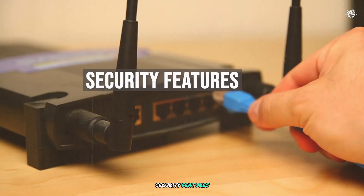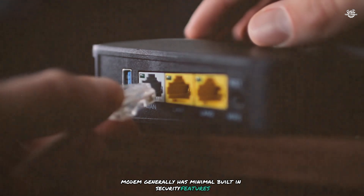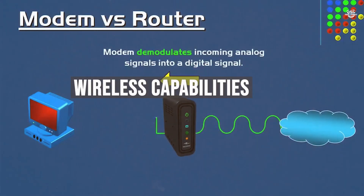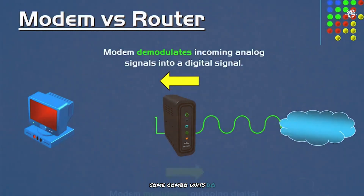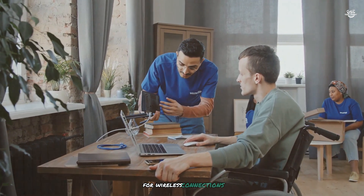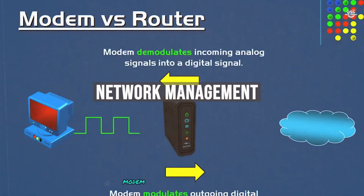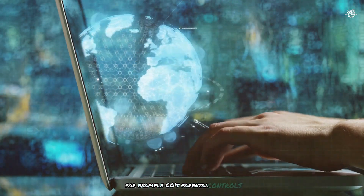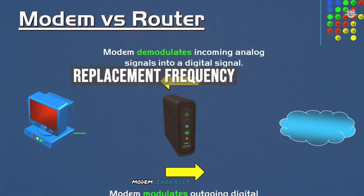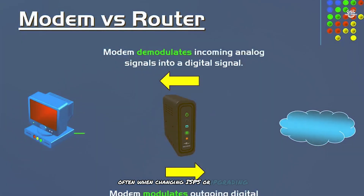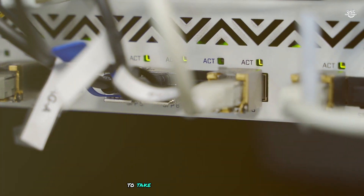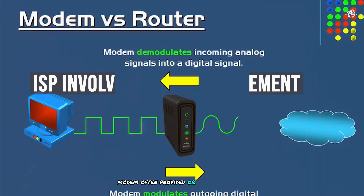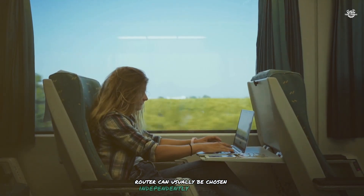Further differences: IP address assignment — a modem uses a public IP address assigned by the ISP, while a router assigns private IP addresses to devices on the local network. Security — a modem generally has minimal built-in security, while a router often includes a firewall, encryption, and other security measures. Wireless capabilities — a modem usually does not provide Wi-Fi, though some combo units do, while a router often includes Wi-Fi. Network management — a modem has limited management capabilities, while a router offers tools such as parental controls. Replacement frequency — modems are generally replaced less frequently, often when changing ISPs, while routers may be replaced more often for new features. ISP involvement — modems are often provided or specified by the ISP, while routers can usually be chosen independently by the user.